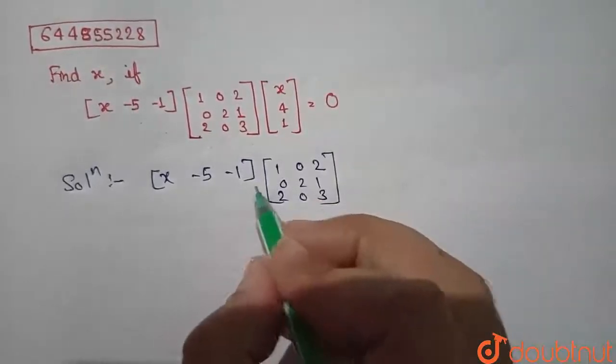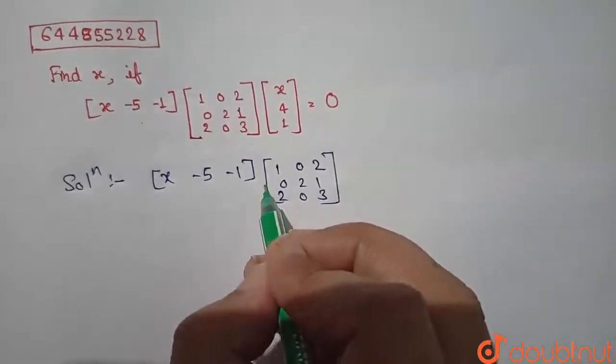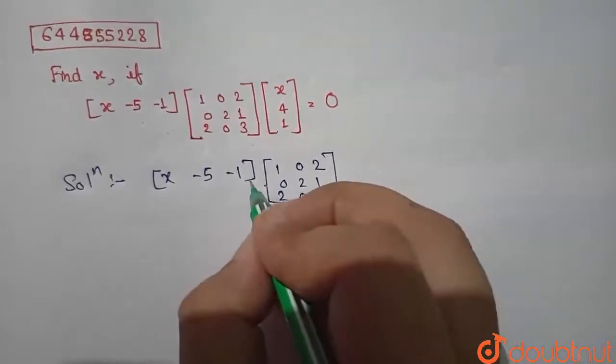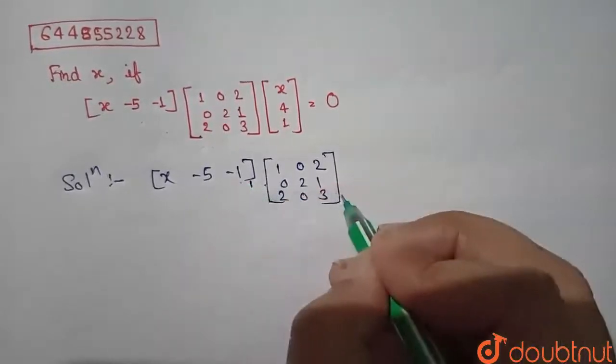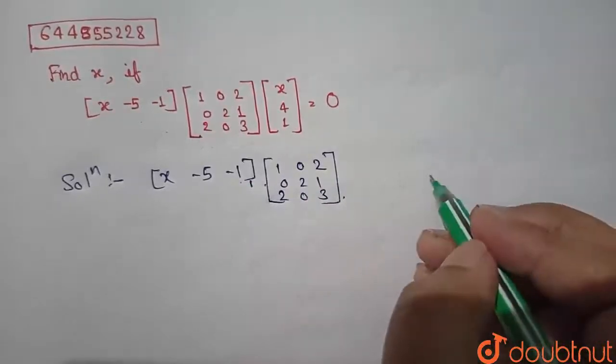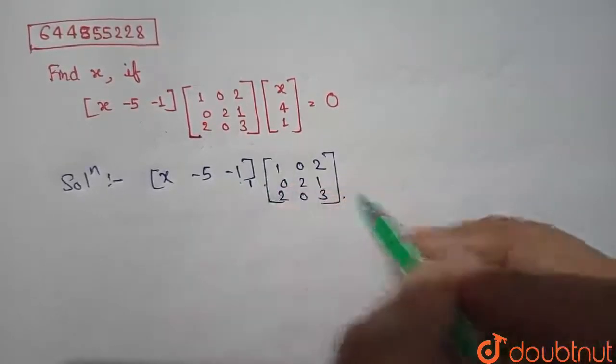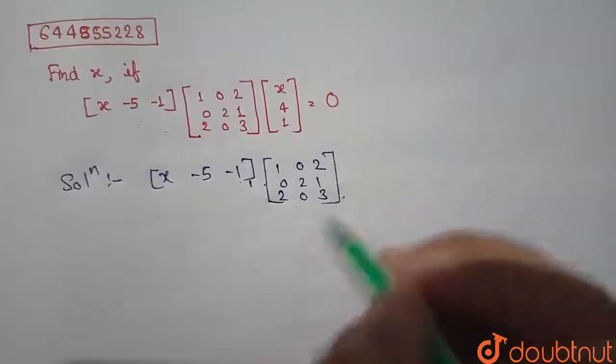Now we know if we multiply two matrices then the column of first matrix should be equal to row of first matrix, and the final product will be equal to row of first matrix into column of second matrix.